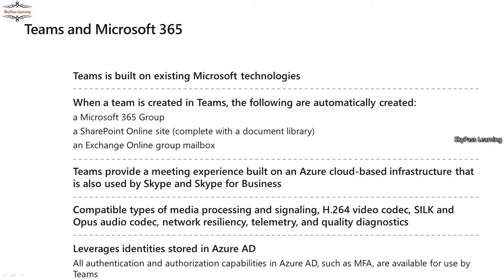When you create a team or group for communication, a SharePoint Online site and Exchange group mailboxes are automatically created and hosted. Authentication is based on Azure AD with MFA, and you can also integrate your on-premises authentication — including hybrid federation — just as with other Microsoft 365 services.